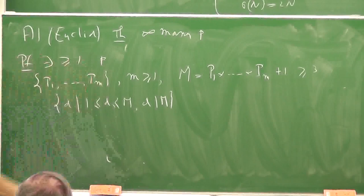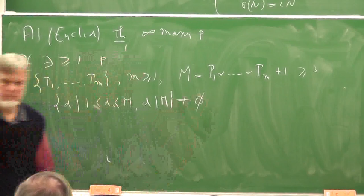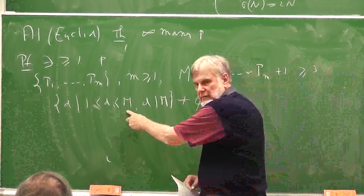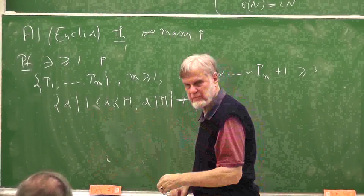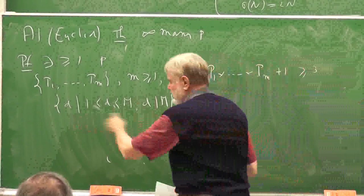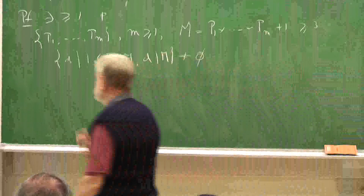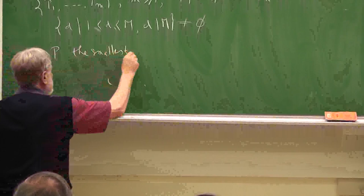And I consider all the D such that one is less than D, D divides M, and D less than or equal to M. And my claim is that this set is not empty. Of course not, because this M is at least three, so D can be chosen to be M. So there is at least one element in this set, and perhaps there are more. This is a set of positive numbers at most M, so that's a bounded set, and I can take the smallest element. So choose P, P smallest in this set.